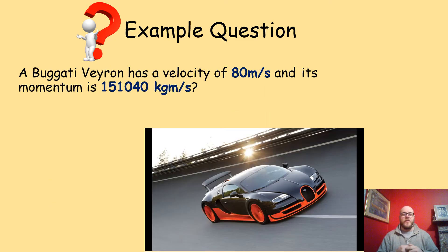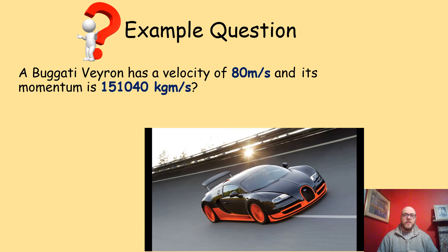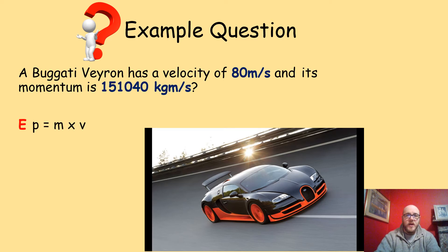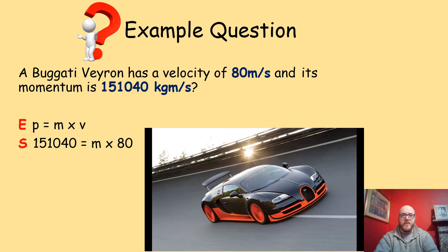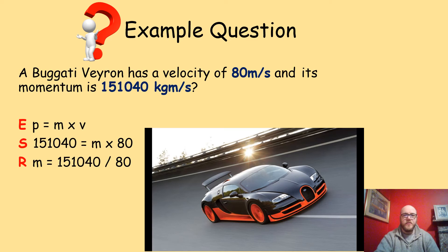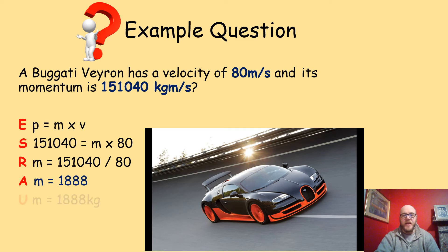Here's a Bugatti — the Veyron — with a velocity of 80 meters per second and a momentum of 151,040 kilograms meters per second. Can you calculate its mass? Using SROE: equation is P equals MV. Substituting: 151,040 equals mass times 80 meters per second. The unknown is not the subject, so divide both sides by 80: mass equals 151,040 divided by 80, which gives 1,888 kilograms — which matches the actual weight of a Bugatti Veyron.